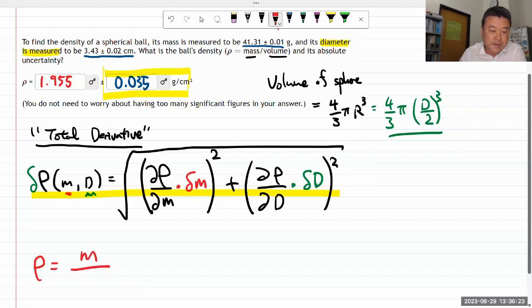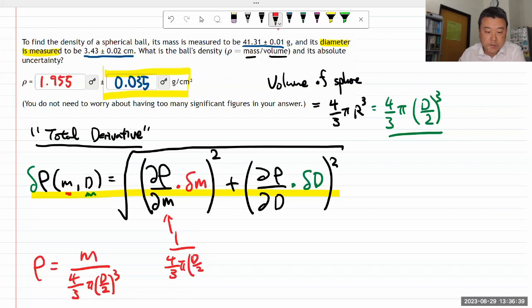Let me write out the density as a function of mass and the diameter: m / (4/3 π (d/2)³). I need its derivative with respect to mass—that's going to be 1 / (4/3 π (d/2)³).